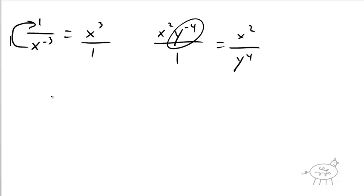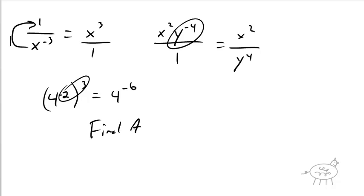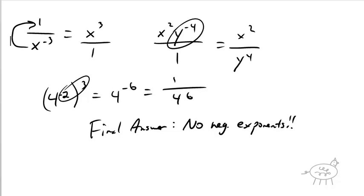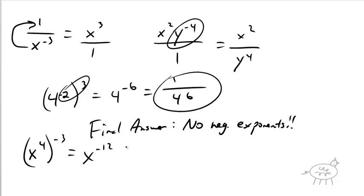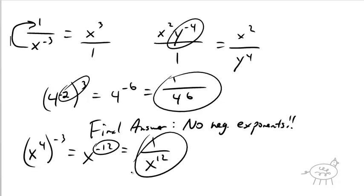Same thing: let's do 4 to the negative 2 raised to the 3rd power. Remember, you multiply the exponents together: 4 to the negative 6th power. Now, importantly, your final answer should have no negative exponents. So 4 to the negative 6 becomes 1 over 4 to the 6th power. Similarly, x to the 4th power to the negative 3rd power is x to the negative 12th power, which is 1 over x to the 12th — change to positive and move to the other side of the fraction.